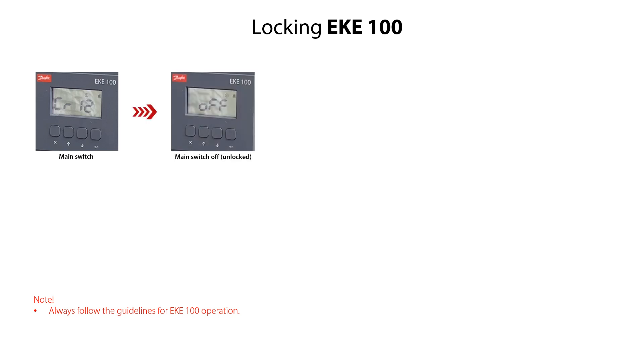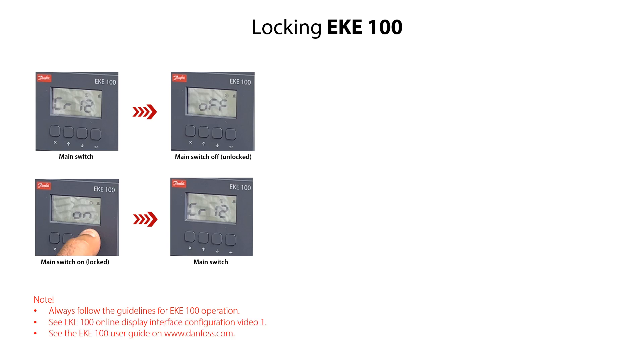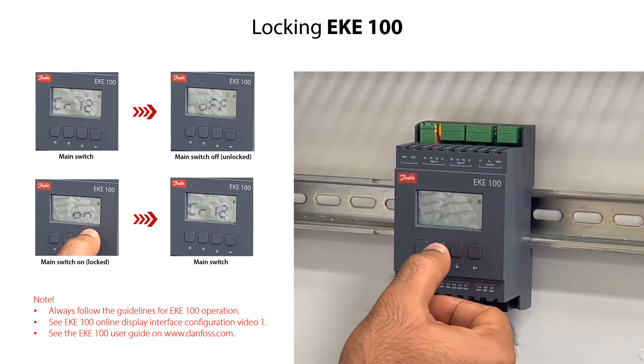After you have completed the configuration of the EKE100, you need to lock it again. From the CR12 mode, press the enter key to change the off setting. Press the arrow up key to change the setting from off to on, then press the enter key to confirm the on setting and return to the CR12 mode. The EKE100 is now locked and ready for operation. Please refer to the EKE100 online display interface configuration video 1 and the EKE100 user guide for further details.